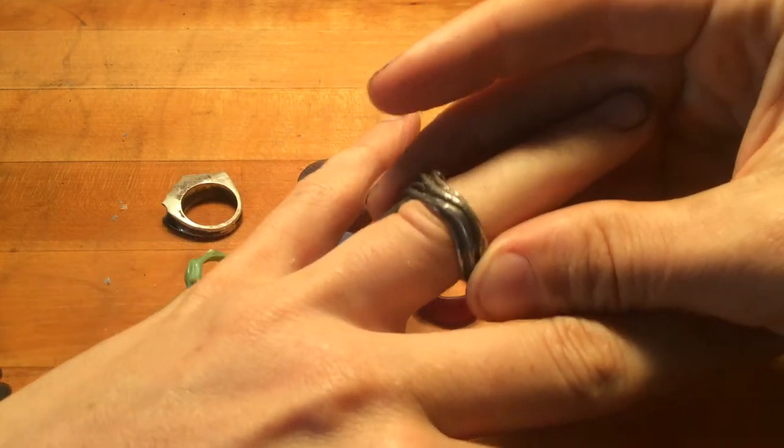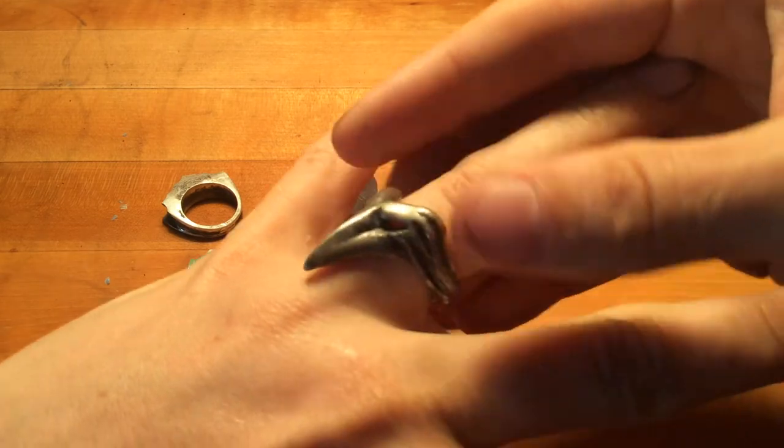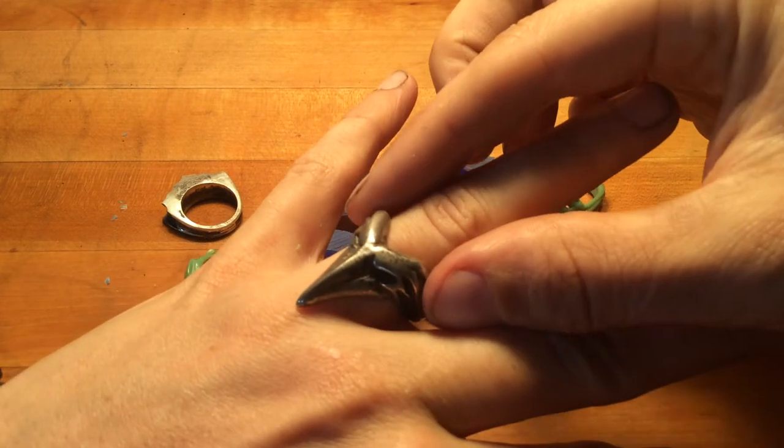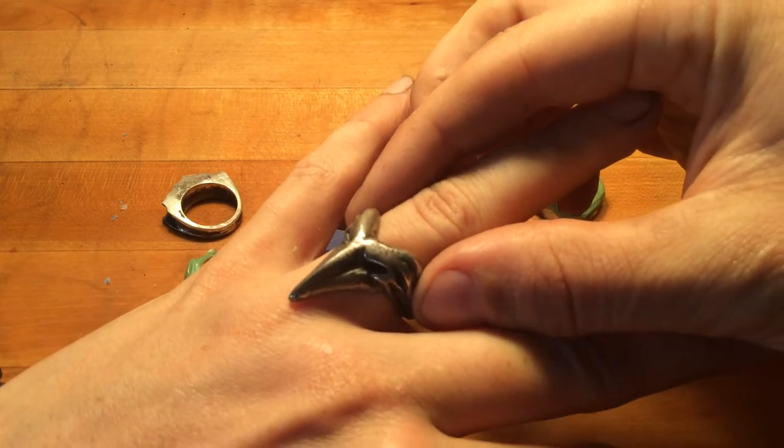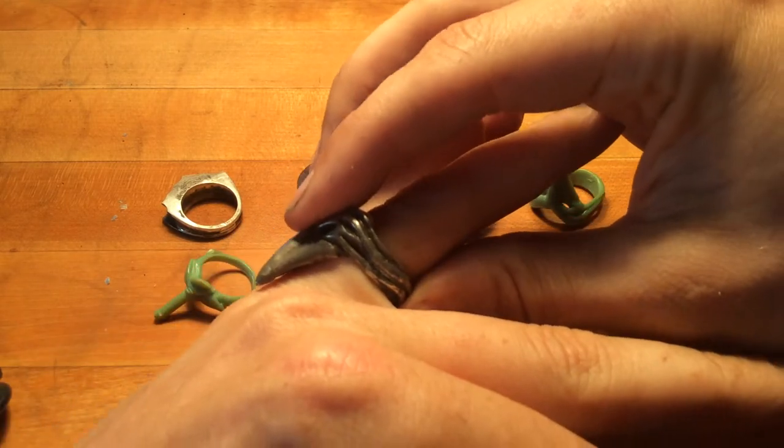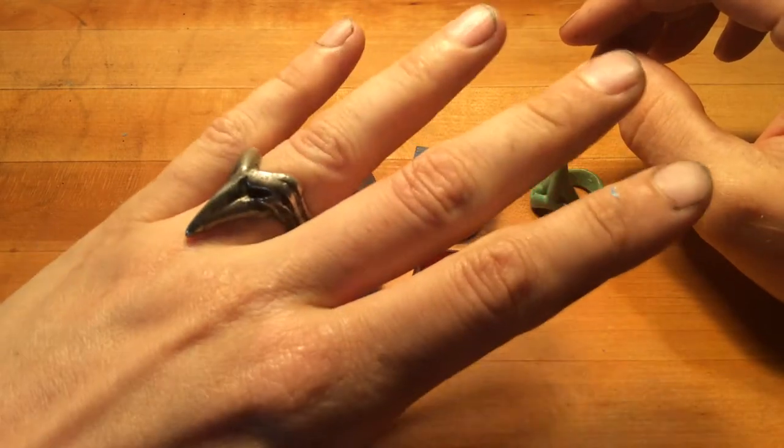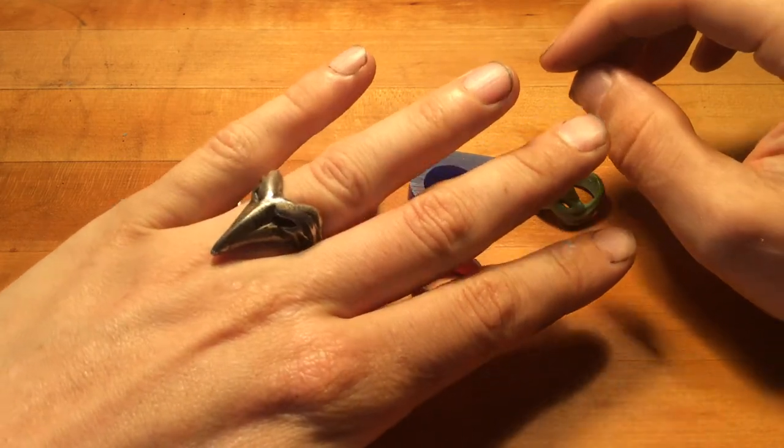So if we put it on, we put it on sideways and then turn it so it rests the way we want. And this width is slightly narrower than the height, and so that locks it in place and allows the ring to lay in a certain way.